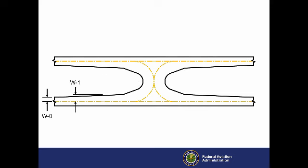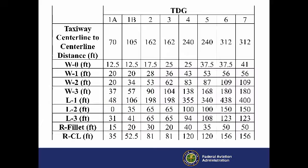W1, and W2, are typical. The last width, W3, is the width of the crossover taxiway at its narrowest point. As shown here in this portion of a TDG table, the AC summarizes the centerline to centerline distance and related widths, lengths, and radii for each TDG.